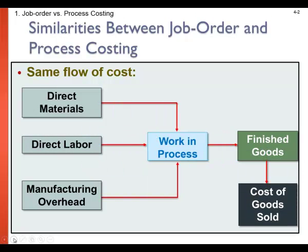This is chapter four, process costing. Job order costing and process costing are two common methods for determining unit product costs. We've already looked at job order costing in the prior chapter. In this chapter we're going to explore process costing, but it's good to still understand what we learned from job order costing so we can apply some of those costing techniques to this chapter also.